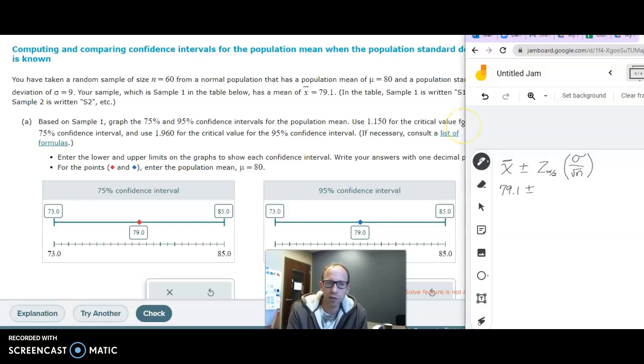Then a critical value, so here we're not going to talk about that much, they just give it to us, so let's use the 1.150 if you want.